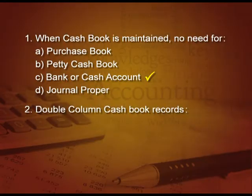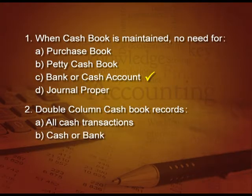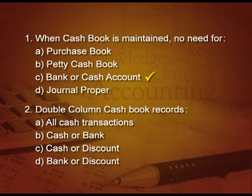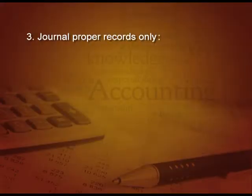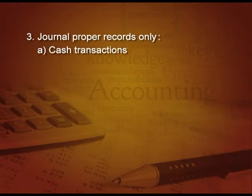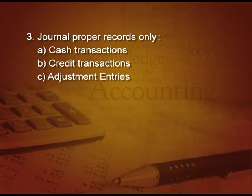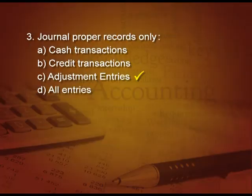Next question: double column cash book records — A all cash transactions, B cash and bank transactions, C cash and discount column, D bank and discount column. The answer is B, that is cash and bank entries. Next question: journal proper records only which entries? A cash transactions, B credit transactions, C adjustment entries, D all these entries. The answer is C, adjustment entries only, because cash transactions are recorded in cash book and credit transactions in their respective books.